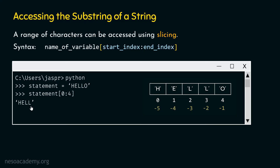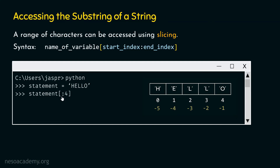There is an alternative way to access a substring starting from index 0. We can actually omit the start index. So instead of specifying 0, we write: statement, opening square bracket, then colon and the end index. There is no need to specify the start index when starting from the first character, as by default the start index is zero. If we hit enter, we will get the string HELL.